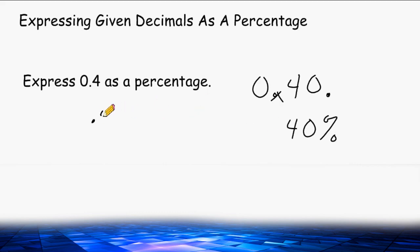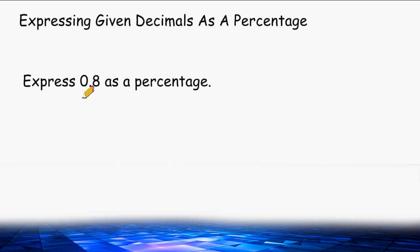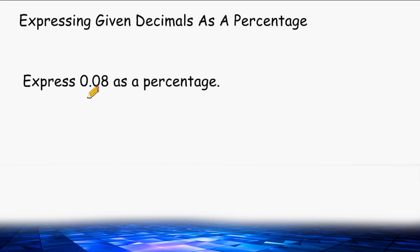In the same way, 0.5 equals 50%, 0.6 equals 60%, and so on. So 0.8 expressed as a percentage equals 80%. And 0.08 would be written as 8%, because moving the decimal two spaces to the right places it directly after the 8.